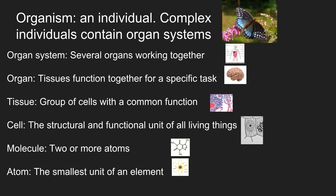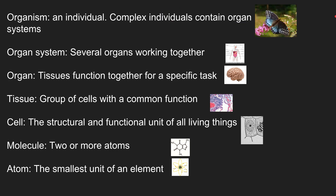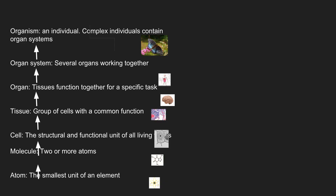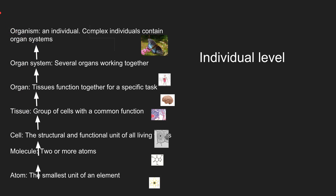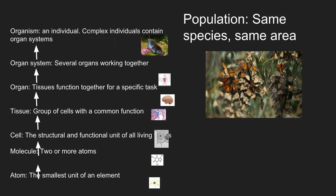Then you have organisms, which you can consider as individuals. Complex individuals contain organ systems. These levels — atom, molecule, cell, tissue, organ, organ system — all occur at the individual level. The next level up is a population, which is a group of individuals of the same species in the same area. You can see how organisms feed into this population level.